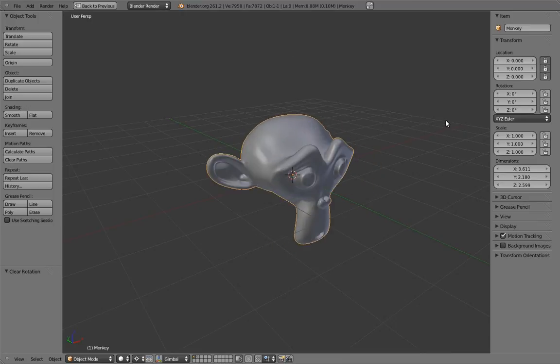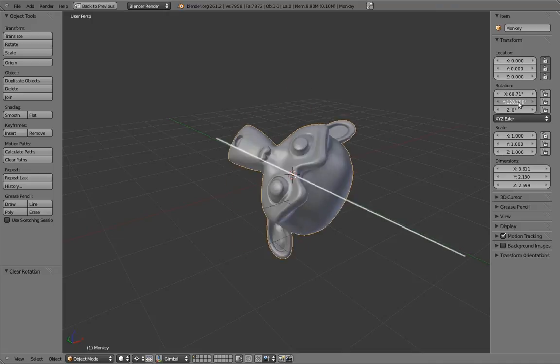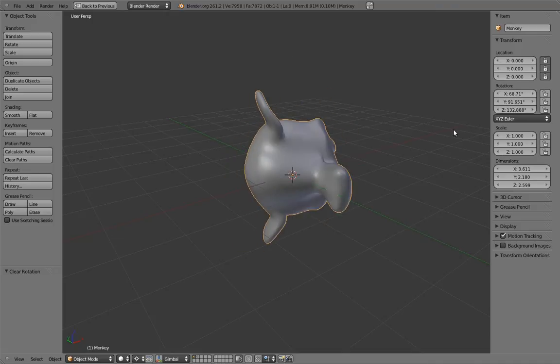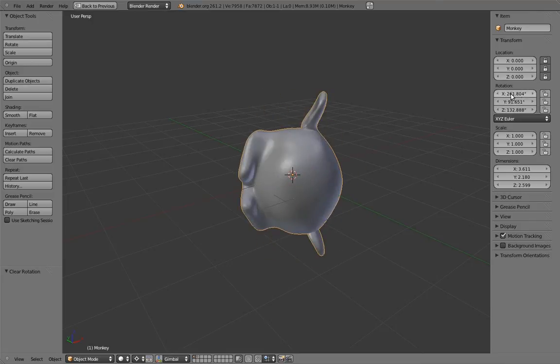And if we play with the values in sequence, first x, then y, and finally the z, this behavior still holds true. However, if we now go back and play with, say, the x-axis, what the? It's not rotating on the x-axis anymore. What's up with that?